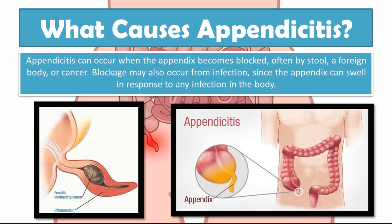If you remember, we said the function of the appendix is not very well known, but some experts believe the appendix has an immune response function. If the appendix is really a lymphoid structure, when we have local signs of infection we have enlarged lymph nodes. Similarly, if the appendix has this immune response function, it will also swell just like lymph nodes swell when they are in the region of an ongoing infection. So if the appendix is swelling in response to an infection elsewhere in the body, it could also cause appendicitis.